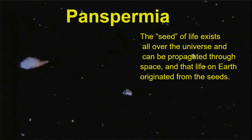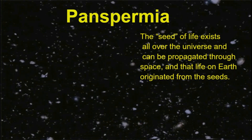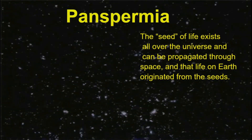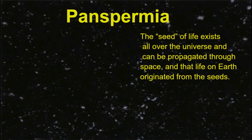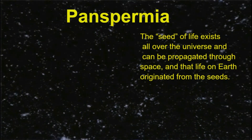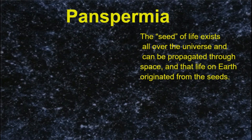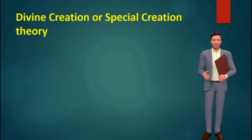Theory number two: panspermia. This theory presumes that the seed of life exists all over the universe and can be propagated through space, and that life on Earth originated from these seeds.